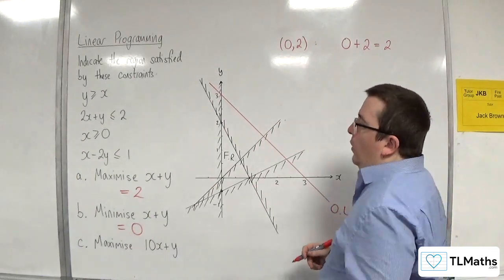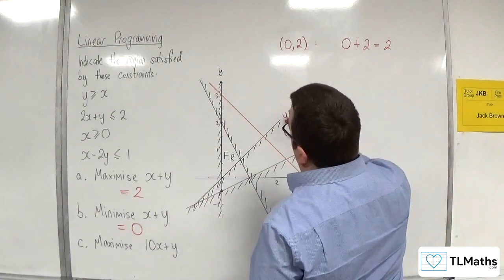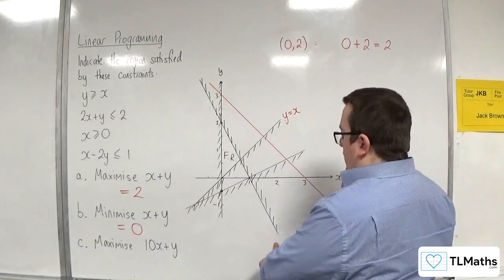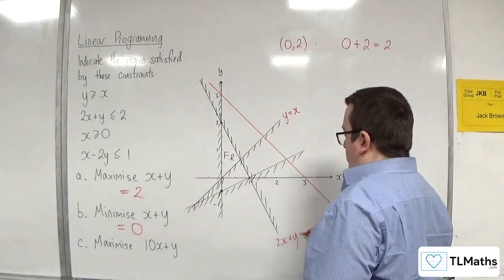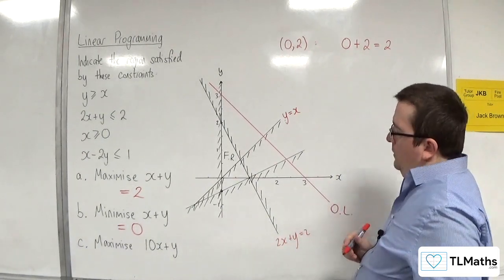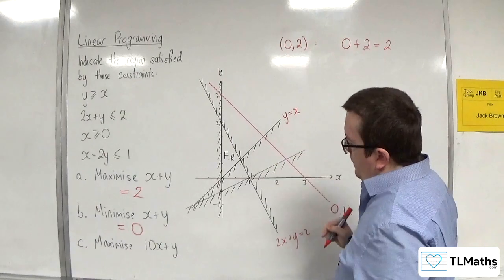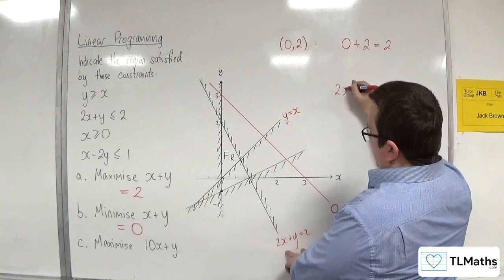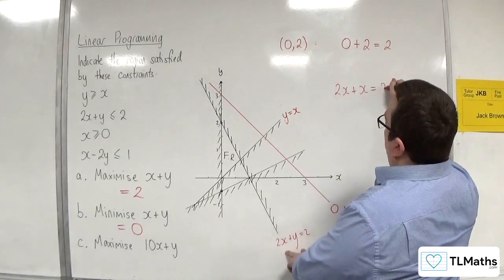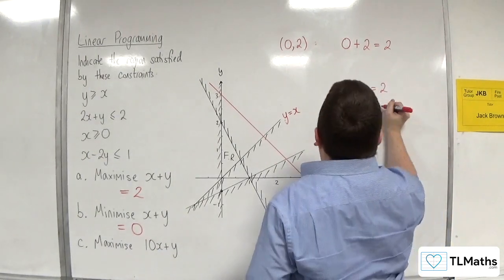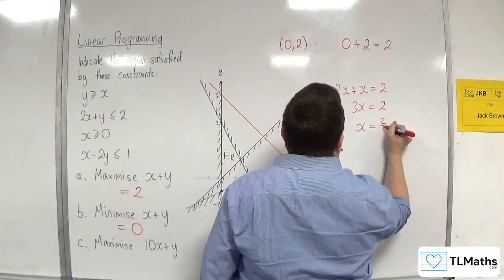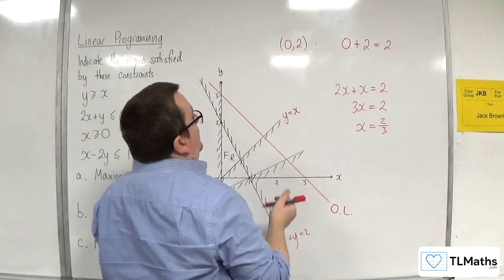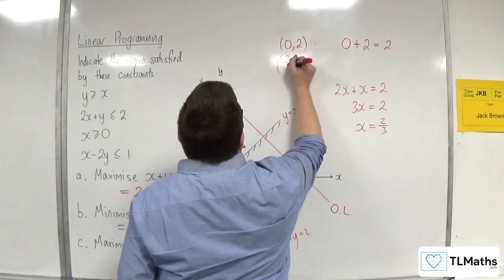So, it's the intersection of the Y equals X line, and the 2X plus Y equals 2 line. So, I need to find that point of intersection. So, that's when, so substitute one into the other, 2X plus X is equal to 2. So, 3X is equal to 2. So, X is equal to 2 thirds. Now, if X is equal to 2 thirds there, and it's on the Y equals X line, then it must be 2 thirds, 2 thirds.